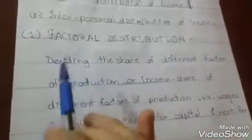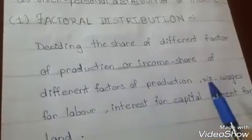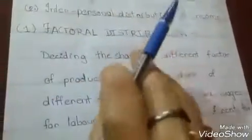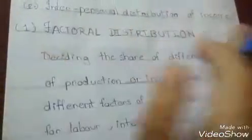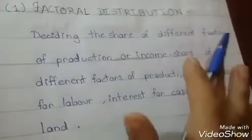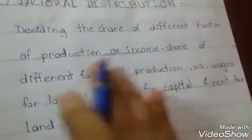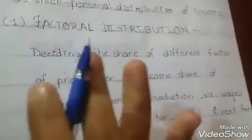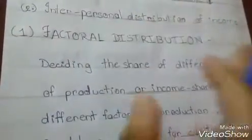Factor distribution of income means deciding the share of different factors of production — the income share of different factors of production — with wages for labor, interest for capital, and rent for land. We can give more or less wages to labor, more or less interest for the capital or machinery used, and more or less rent for land. This is what factor distribution of income covers.